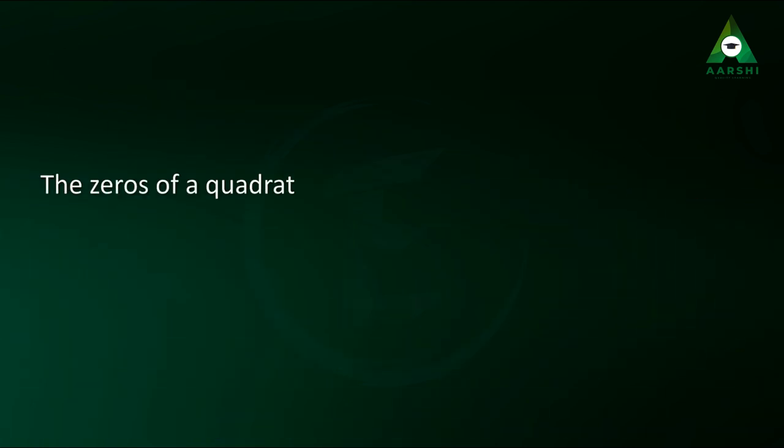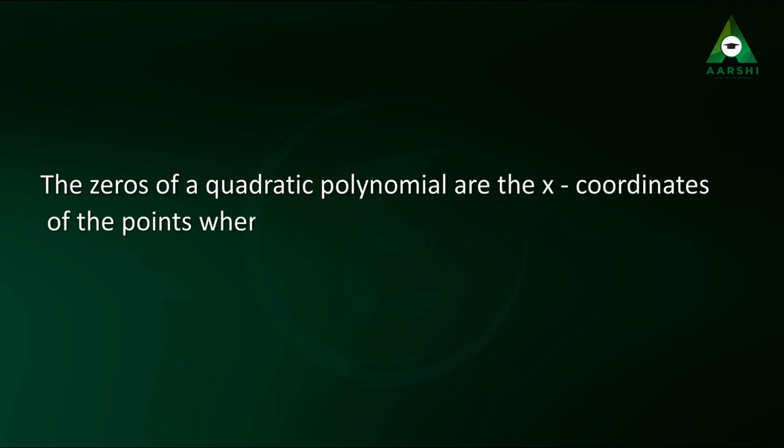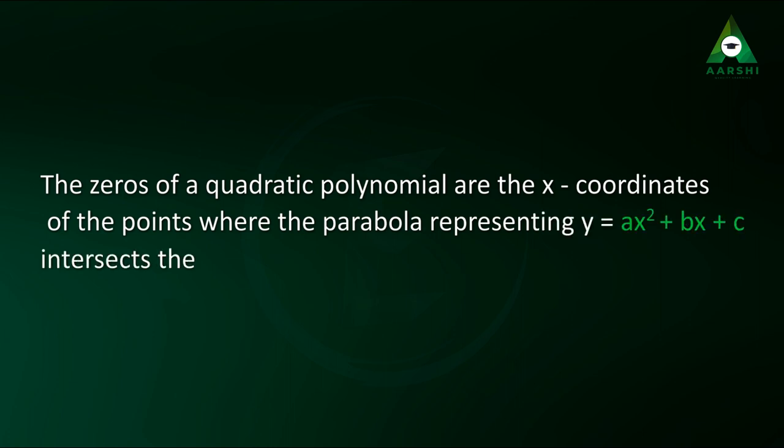The zeros of a quadratic polynomial are the x coordinates of the points where the parabola representing y equals a x square plus b x plus c intersects the x axis.